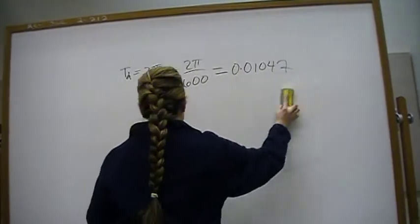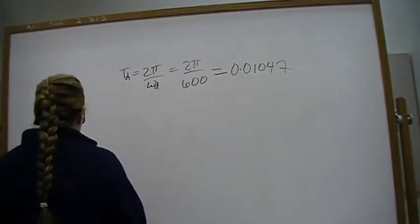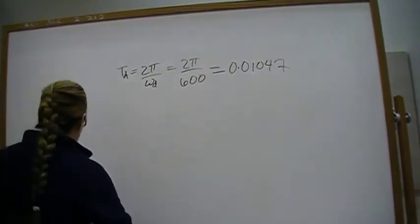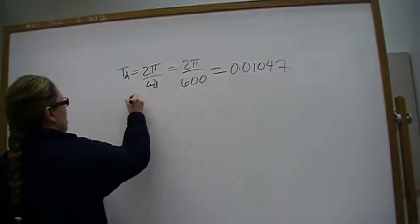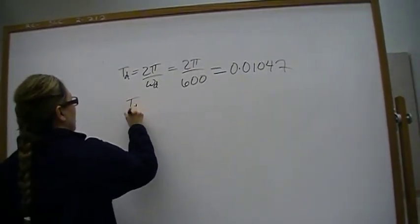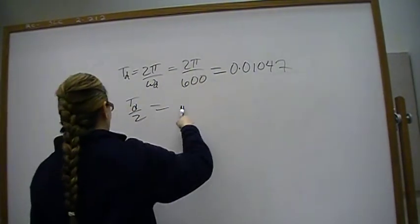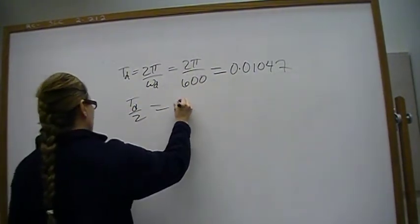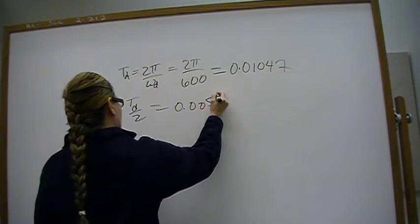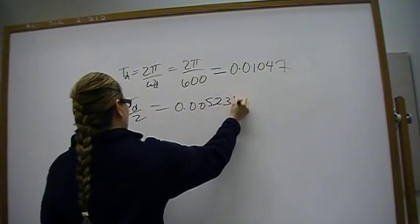So in part d, we're asked to compare it to td over 2. So td over 2 is just going to be that value divided by 2. And that is 0.0125235.